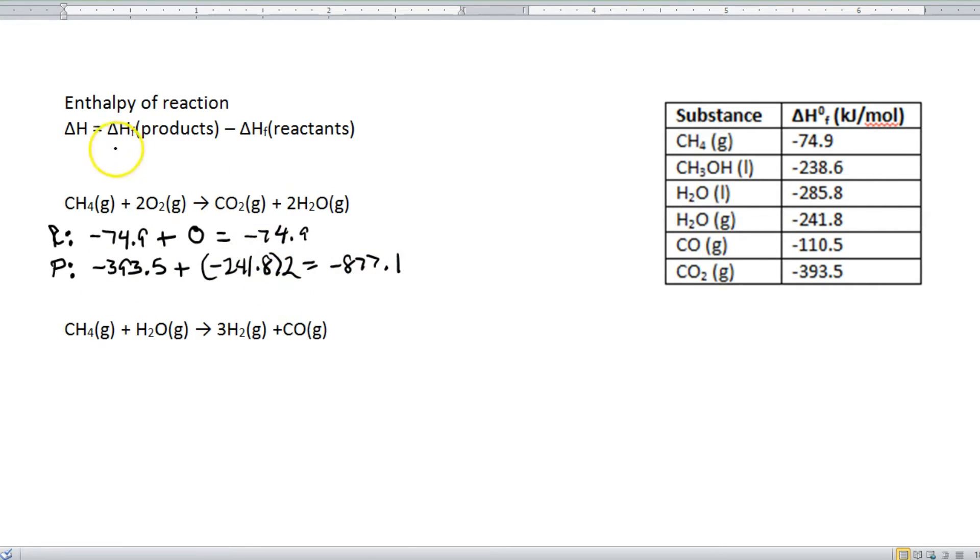Step number three. Use this equation. And we take the products minus the reactants. So negative 877.1 minus negative 74.9. And if you remember your algebra skills, this is just like adding a positive.